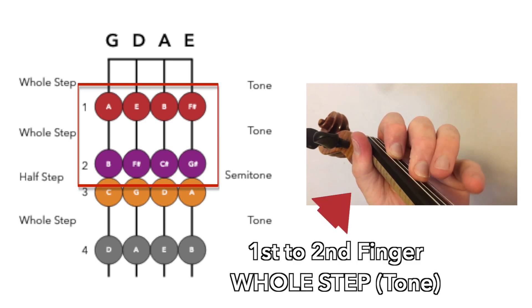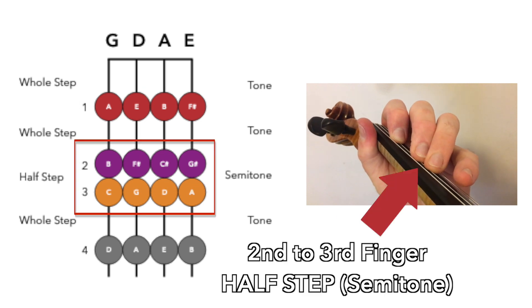The second finger notes and the third finger notes, that's the yellow circles, don't have a whole step between them. They have the space just of a half step or a semitone.